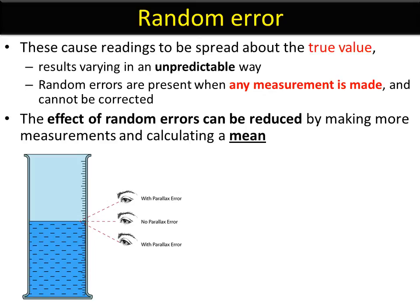Here's an example of parallax error. Depending on what angle you are at when you read the measuring cylinder here, you're going to get a different value unless you're dead level with the level of the water. It's quite easy to make mistakes that way.